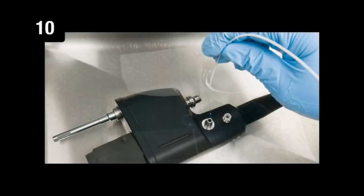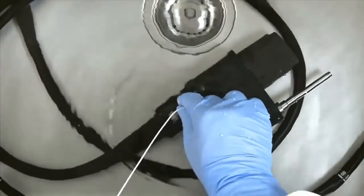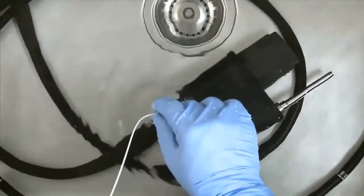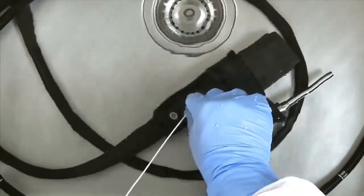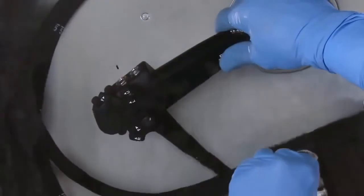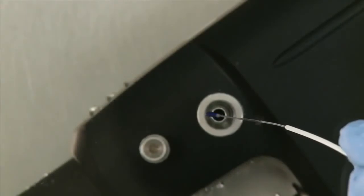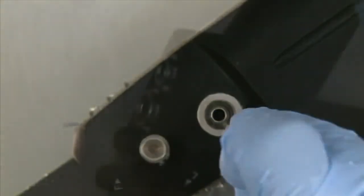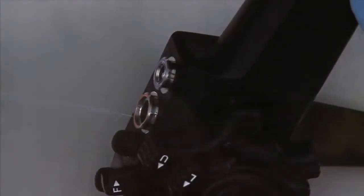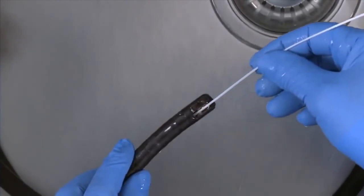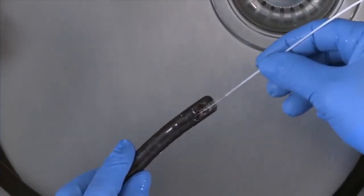Step 10: Brush the endoscope's channels. Using the long disposable channel cleaning brush, brush the suction port from the PVE connector at least two times or until the bristles emerge from the suction channel cylinder visibly clean. Ensure that the blue tip is inserted first. Pass the same brush through the hole in the bottom of the suction cylinder on the control body at least two more times or until the bristles emerge from the distal end of the insertion tube visibly clean.